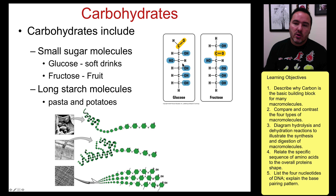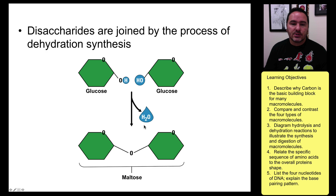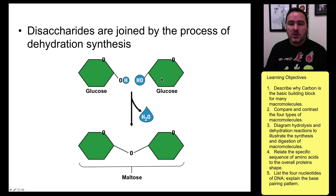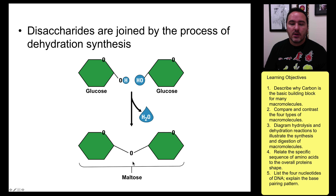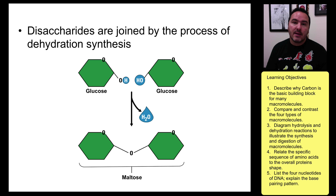You can put these glucoses and fructoses together in long chains to make starch. Through the process of dehydration synthesis, two glucoses form a disaccharide called maltose. You can do the same thing with glucose and fructose to make sucrose, or table sugar.